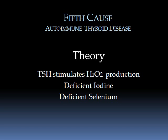The fifth cause of low thyroid hormone symptoms is autoimmune thyroid disease. One of the most prevalent theories is that TSH stimulates the thyroid to make more thyroid hormones by increasing levels of hydrogen peroxide (H2O2) production within the thyroid cells. Hydrogen peroxide is very important for the conversion of iodide to iodine. When H2O2 levels increase and the hormone can't be made due to inadequate iodine, it starts to cause inflammation and destruction of the thyroid cells, and finally the immune system steps in.